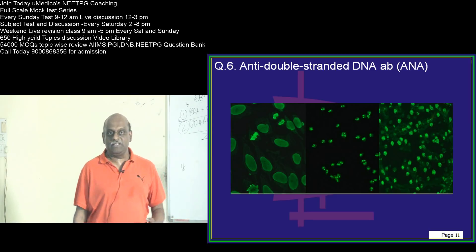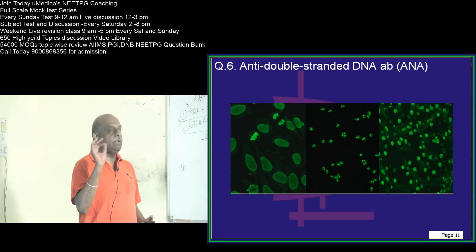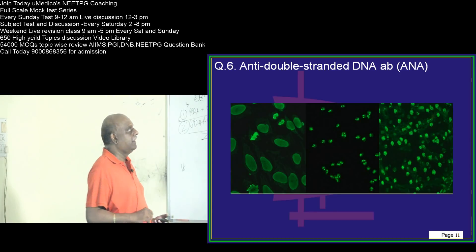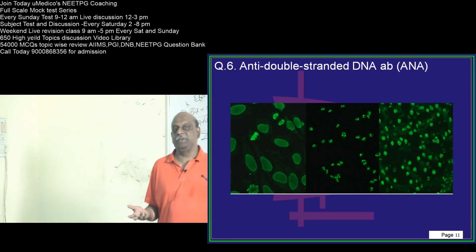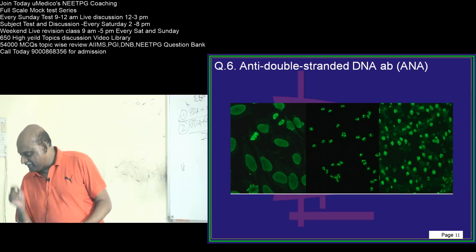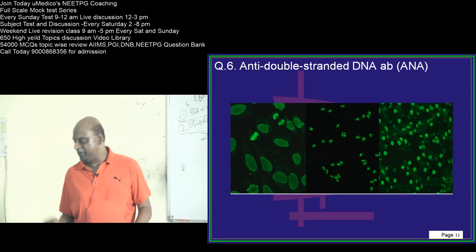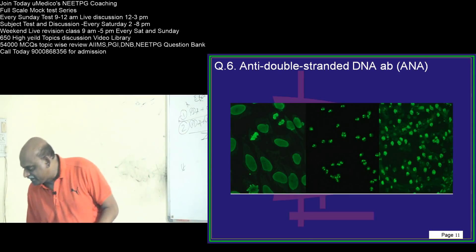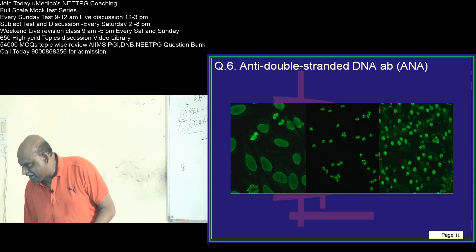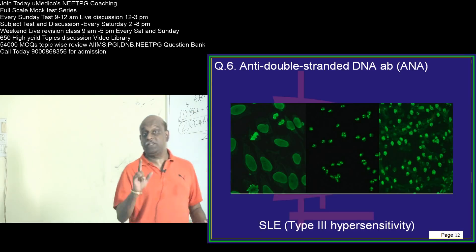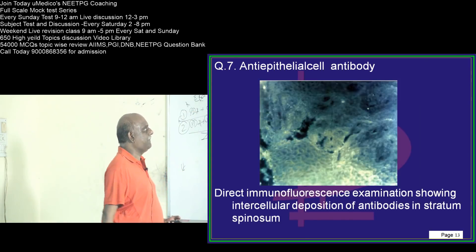Question number 6: anti-double-stranded DNA antibody — where do you find it? I think this is the cheapest question on the planet. Mark it as 6 and answer. Please punch your answer along with the number. Excellent! SLE, which is a type 3 hypersensitivity. Don't forget — this is a favourite question of the examiner.